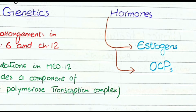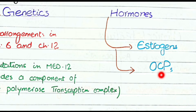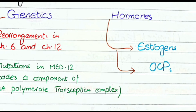The second hormonal factor that can cause this disturbance is oral contraceptive pills. These pills, especially if they contain estrogen and do not contain progesterone, will favor the development of leiomyomas.